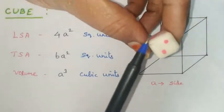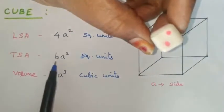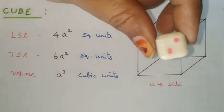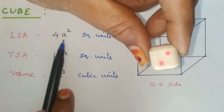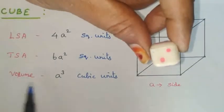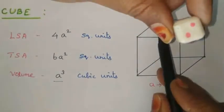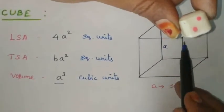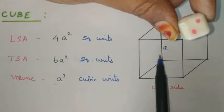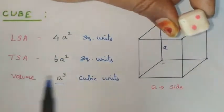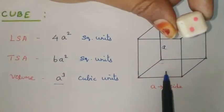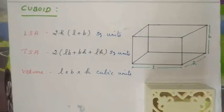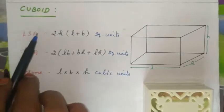The cube has 4 lateral sides plus the top and bottom — 6 faces in total. LSA = 4a². TSA = 6a². Volume = a³.